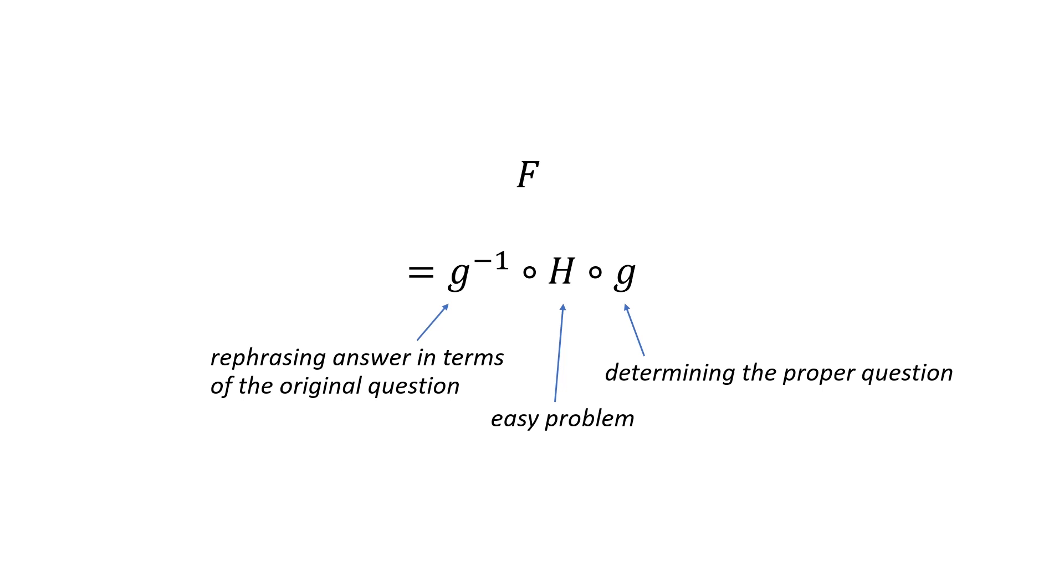Let's call Einstein's fate-determining problem F, a difficult problem. Then he would decompose it into something like this. Where G is the difficult task of determining the proper question. H is an easy problem. And G inverse takes the answer to the easy problem and reframes it in the context of the original problem F. We did this twice in our problem. First, in discovering that this is a linear transformation when you write x in terms of two new variables, n and d. And then again, when we rewrote our linear transformation in terms of what it does to the eigenvectors.